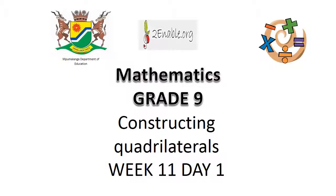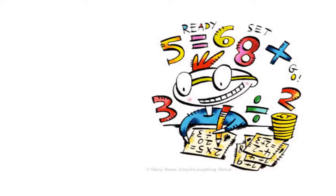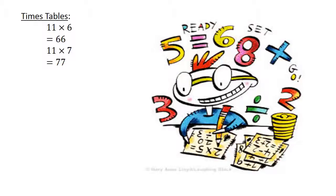Constructing quadrilaterals. Mental math. Times tables. Eleven times six equals sixty-six. Eleven times seven equals seventy-seven. Addition.